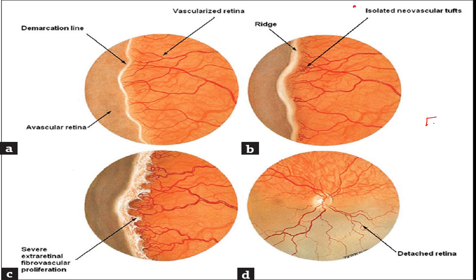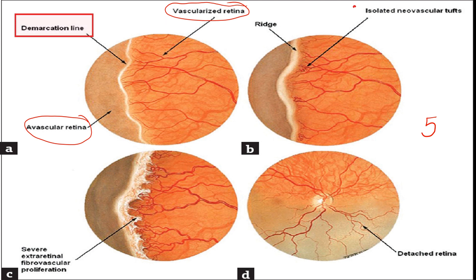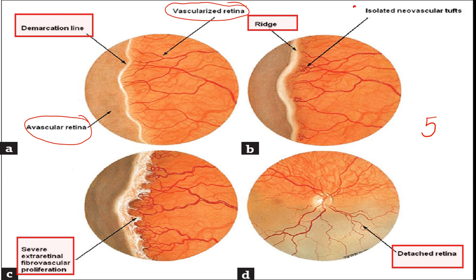ROP basically has five stages and these stages are based on the features seen at the junction of vascularized retina and the avascular retina. Stage one is the presence of a demarcation line. Stage two is the presence of a ridge. Stage three is when new vessels start developing onto the ridge, called severe extra retinal fibrovascular proliferation. In stage four the retina is partially detached, and in stage five there is a complete retinal detachment.